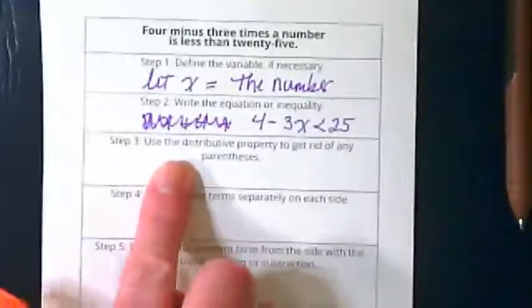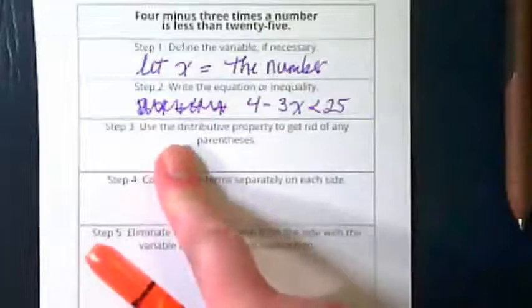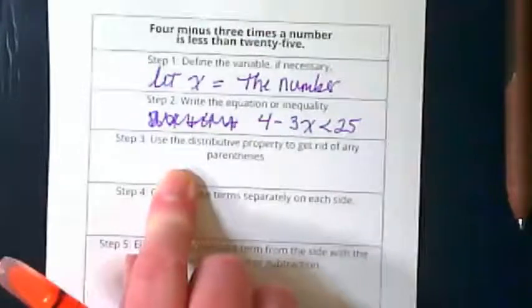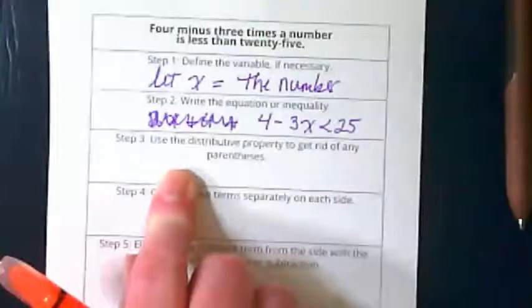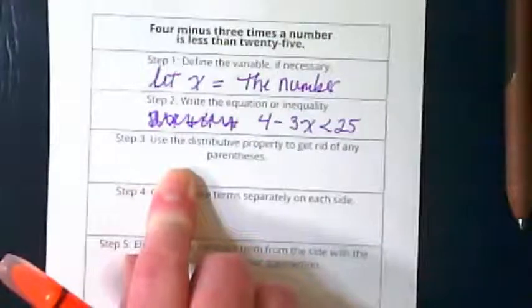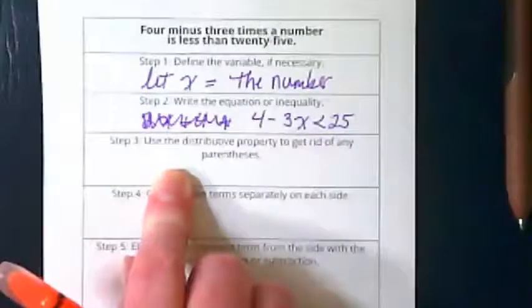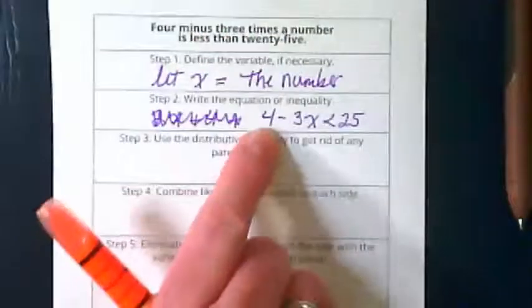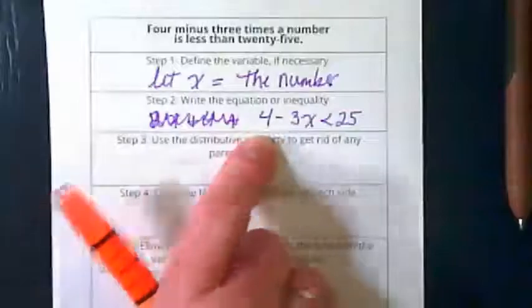I think there's only one more, and it is on the back of the next page. 4 minus 3 times the number is less than 25. What's our keywords here that turn this word sentence into this number inequality?